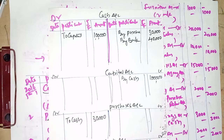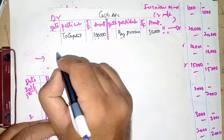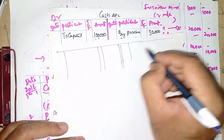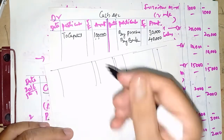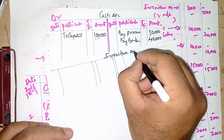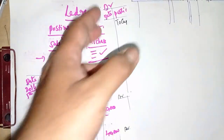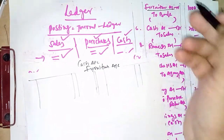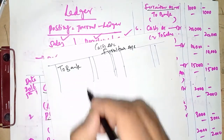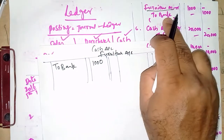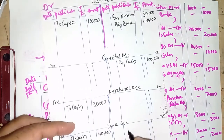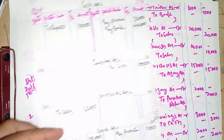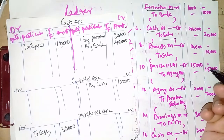Next: Furniture Account debit, to Bank Account. We open a new Furniture Account. Furniture is on the debit side — recorded in Furniture Account debit side as 'To Bank — 1,000.' Bank Account is on the credit side — recorded in Bank Account credit side as 'By Furniture — 1,000.'